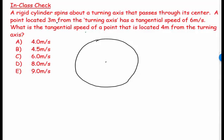A point located 3 meters from the turning axis has a tangential speed of 6 meters per second. What is the tangential speed of a point located 4 meters? So let's take a radius.